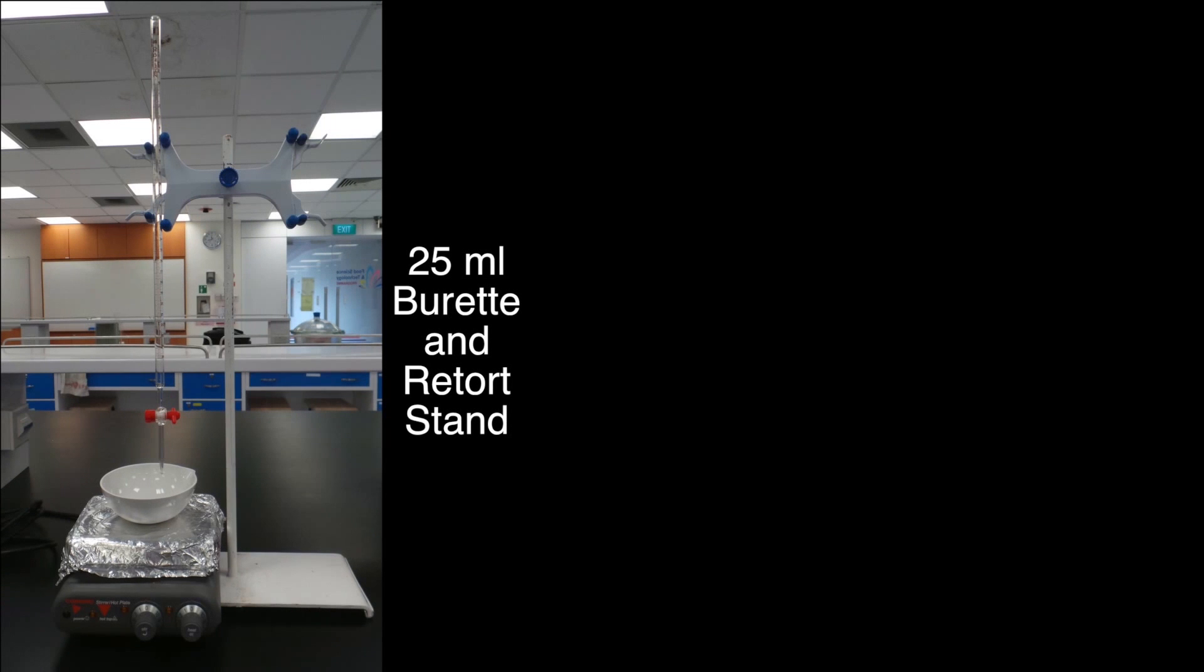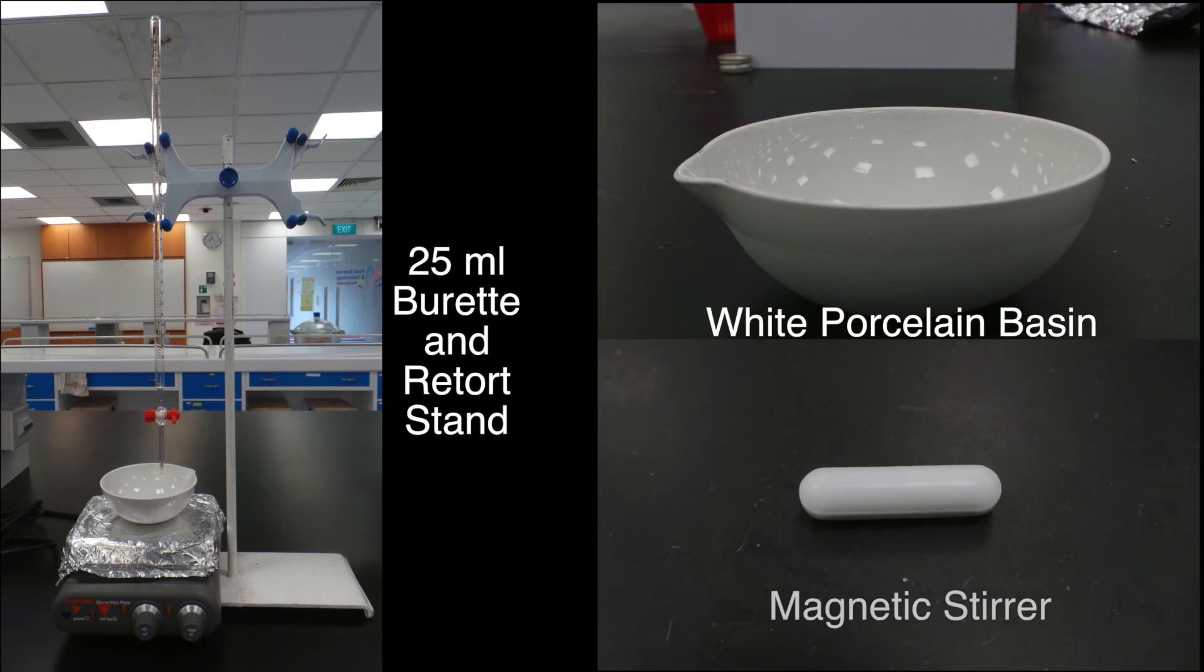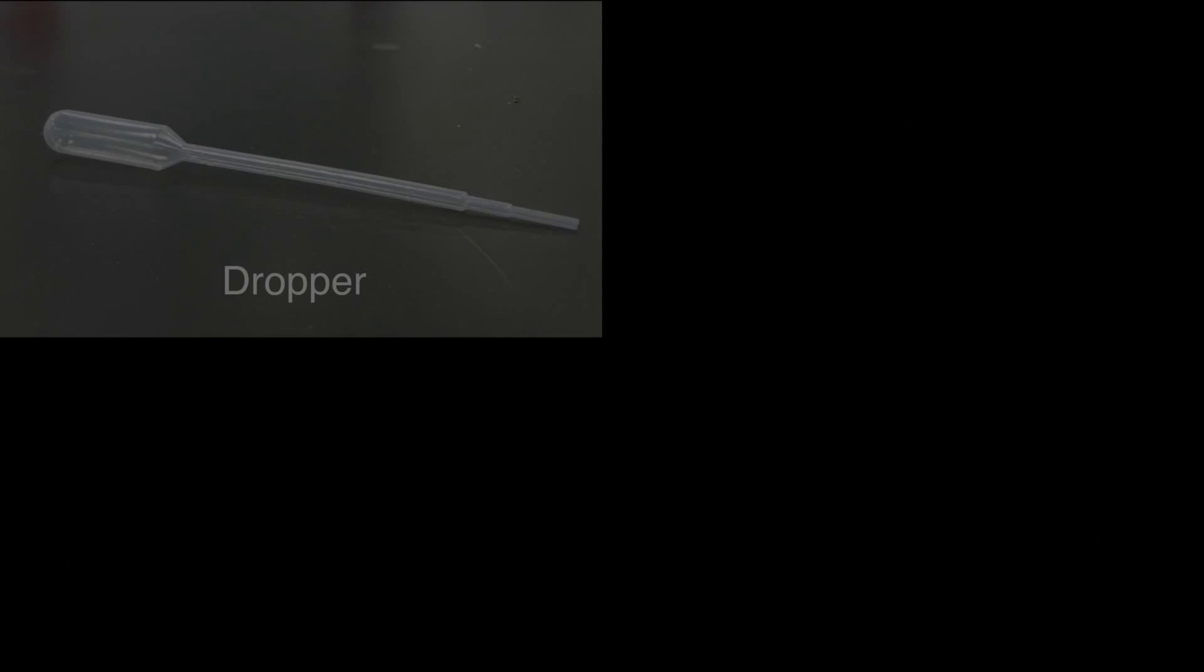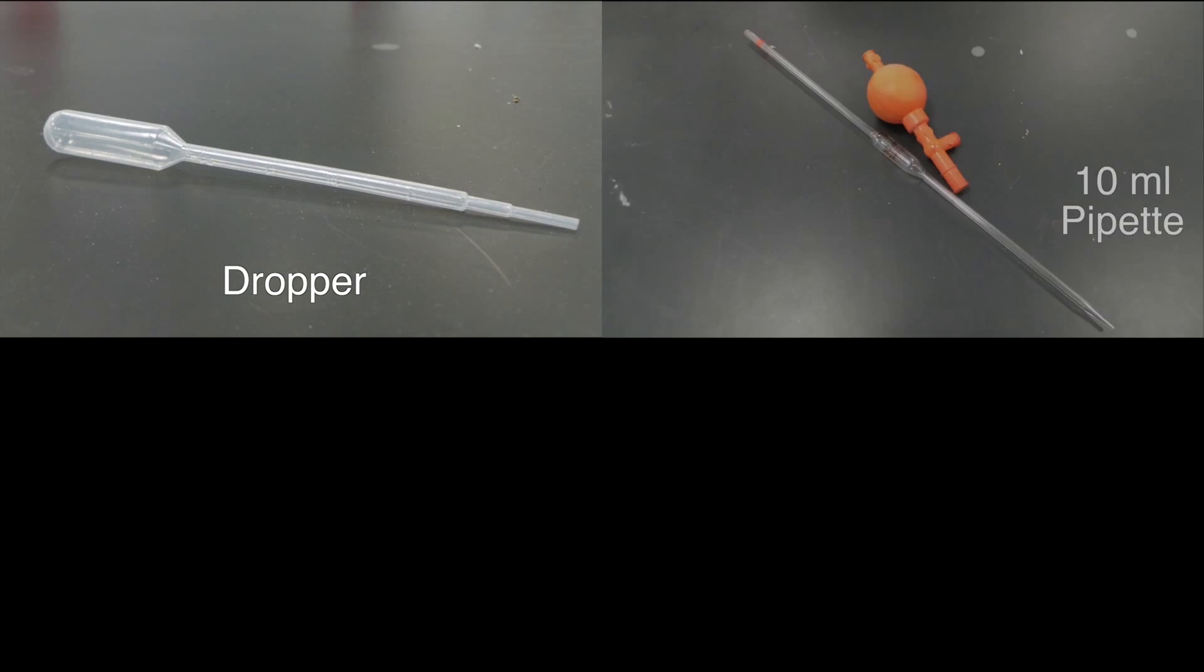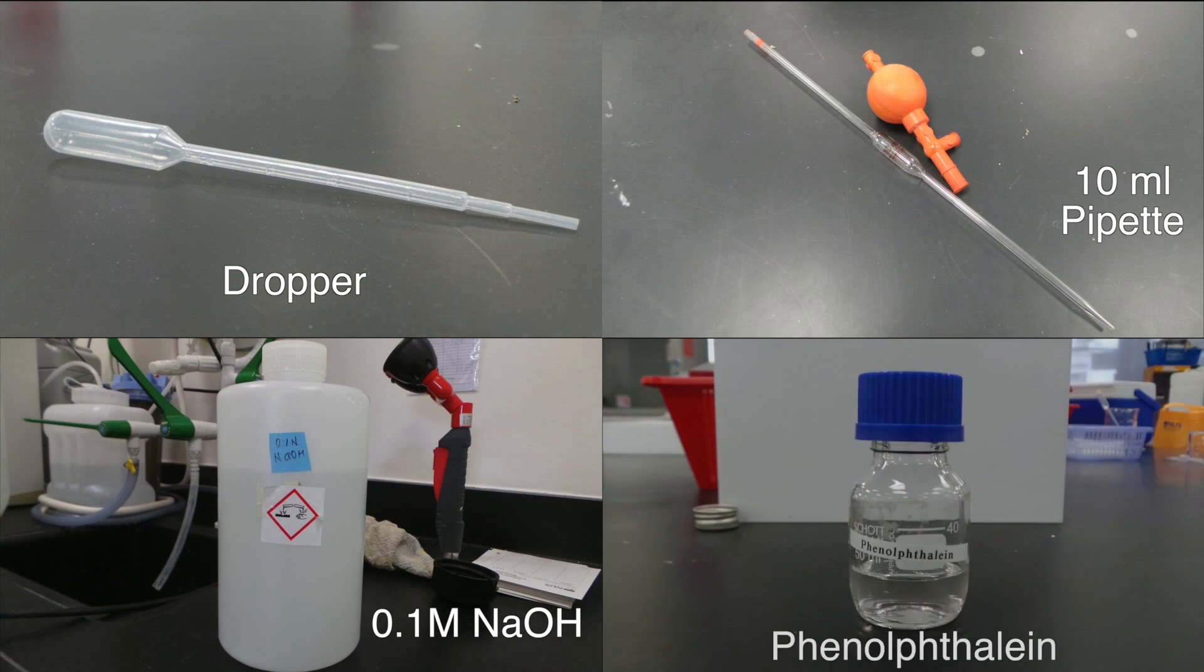In this experiment, the apparatus and reagents needed are 25 ml burette, retort stand, white porcelain basin, magnetic stirrer, plastic dropper, 10 ml pipette, 0.1 molar of NaOH, and phenolphthalein.